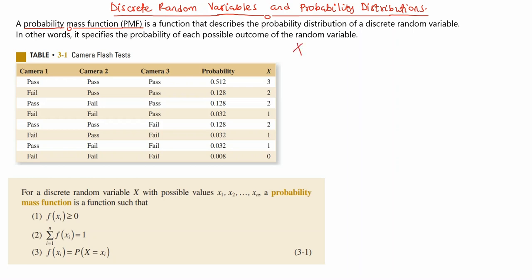When you throw a fair die, you can get a 1, 2, 3, 4, 5, or 6. So our random variable X is the set of possible values you can get at the end of this experiment. Since we are throwing a fair die, there is equal probability of each outcome occurring, so we are going to assign a probability to each of these outcomes.